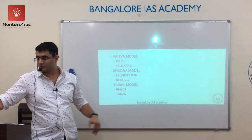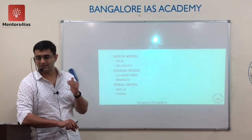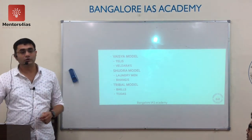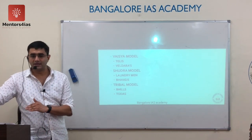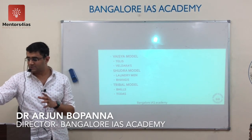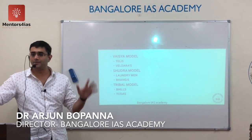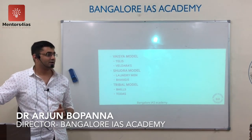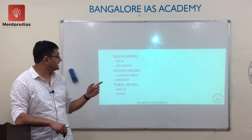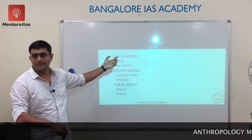The Shudra model was mainly followed by Dalits. The Shudra model involves giving up defiling or dirty occupations, taking up cleaner occupations, and adopting Vedic rituals. Examples include the laundry men of UP and the Bhangi of Delhi who followed this model.